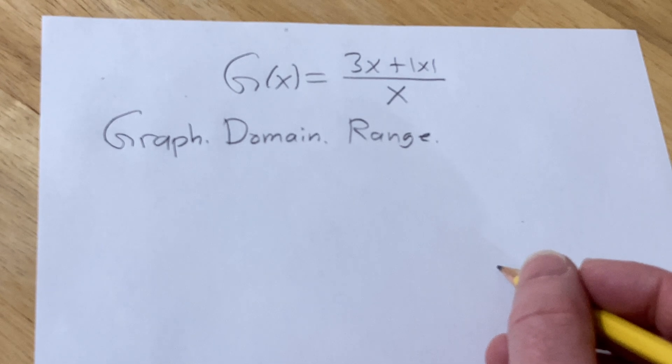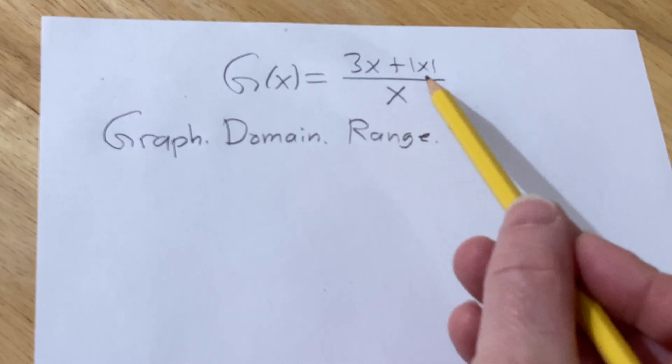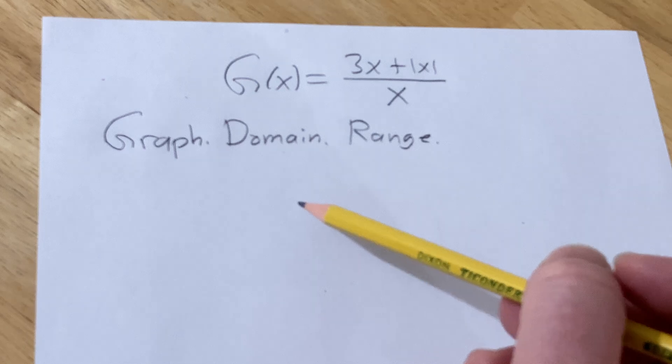Hi, in this video we're going to graph this function. We have G(x) equals 3x plus the absolute value of x, all over x. We're going to graph it, find the domain, and find the range.